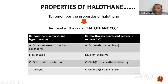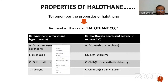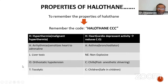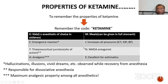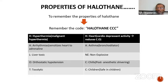Anesthetic halothane properties mnemonic: 'HALOTHANE CC' — H = malignant hyperthermia, A = arrhythmias (sensitizes heart to adrenaline), L = liver toxicity, O = orthostatic hypotension, T = tocolytic, H = heart (cardiac depressant, reduces cardiac output), A = asthma (safe — bronchodilator), N = non-explosive, E = (included), C = chills (post-anesthetic shivering), C = safe in children. Ketamine properties mnemonic: 'KETAMINE' — K = kids (drug of choice as anesthetic in children), E = emergence reaction (hallucinations, vivid dreams), T = thalamocortical junction (site of action, causes dissociative anesthesia), A = analgesia (maximum among anesthetics), M = can be given on full meal/full stomach, I = increases intracranial pressure, ocular pressure, and blood pressure, N = NMDA receptor antagonist, E = excellent for asthmatic patients.